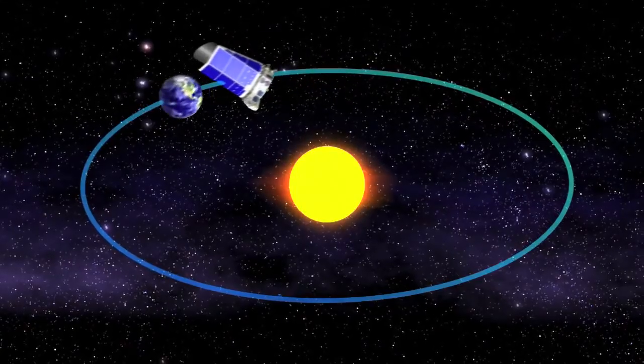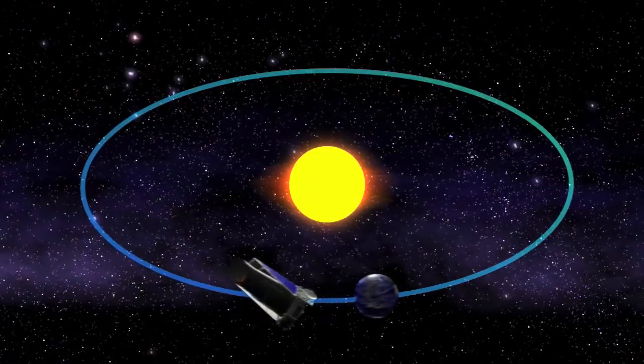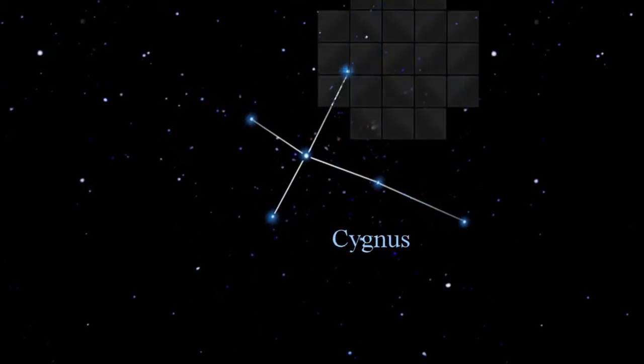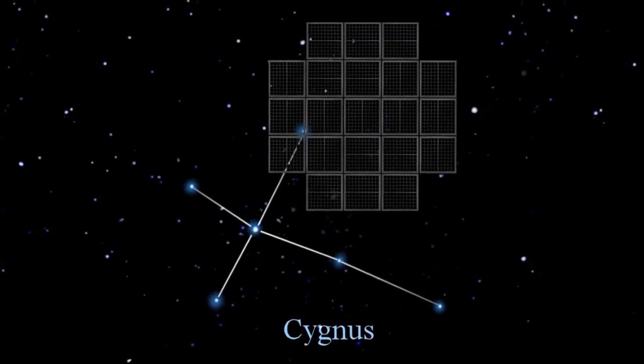Kepler is looking at over 100,000 stars in one region of sky all at once, with the goal of finding planets with the potential for harboring life. Throughout its mission, it will be looking at the area of sky in the constellation Cygnus the Swan and has a very large field of view that allows measuring many stars at one time.